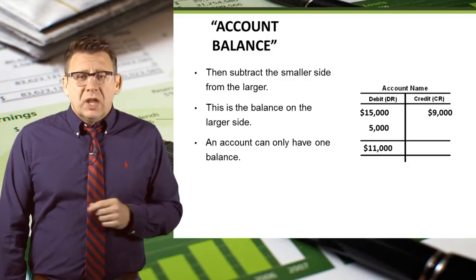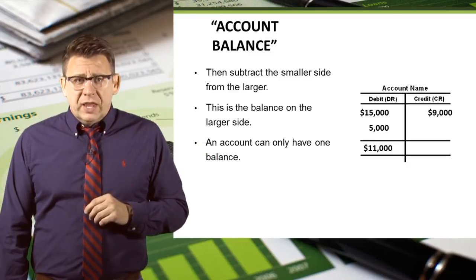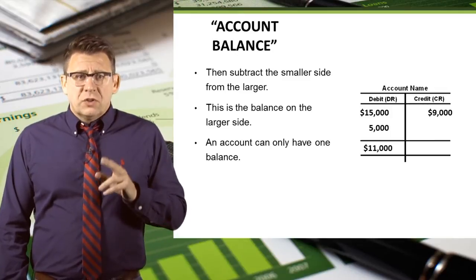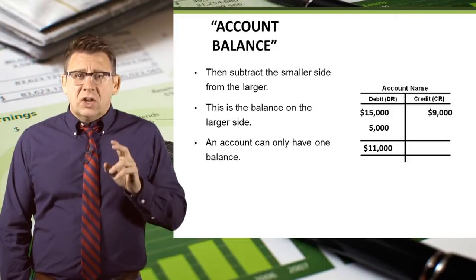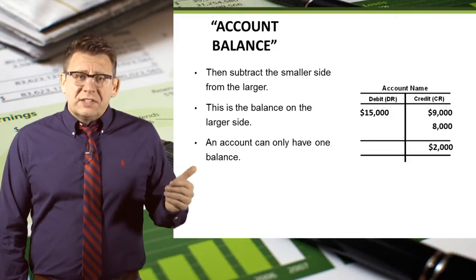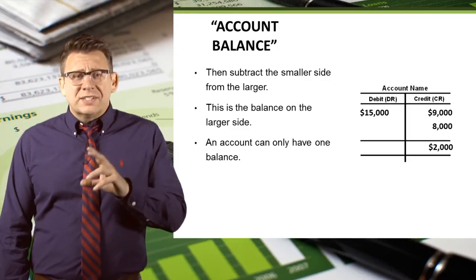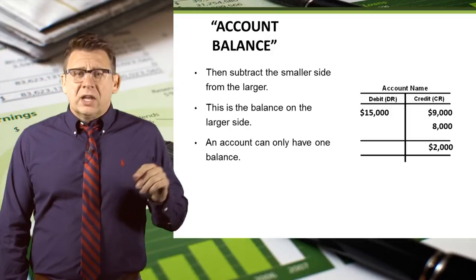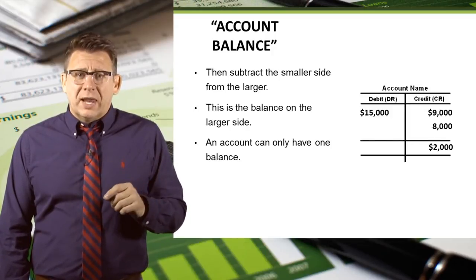In this example, debits are $20,000 and credits are $9,000, so the balance of this account is an $11,000 debit balance. In this next example, debits are $15,000 and credits are $17,000, so the balance of this account is a $2,000 credit balance.